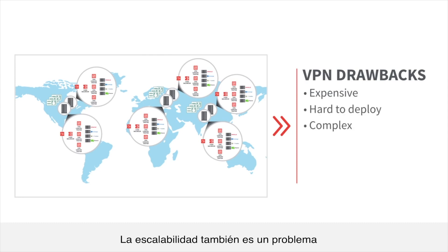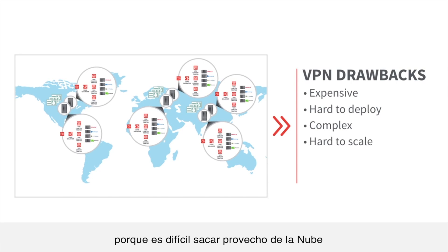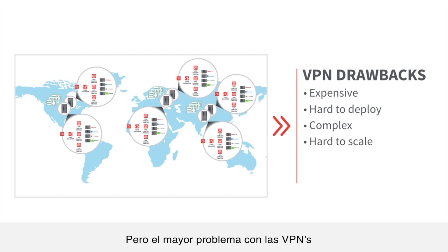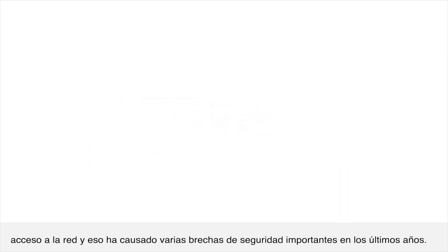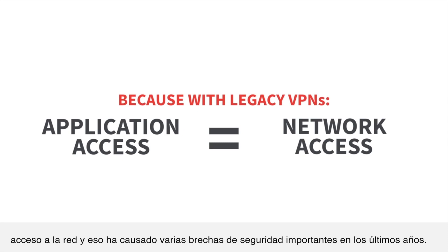Scalability is also an issue, because it's hard to take advantage of the cloud when you're anchored to a network. But the biggest issue with VPNs remains security, because today's application access is really network access, and it's caused some big security breaches in the last few years.